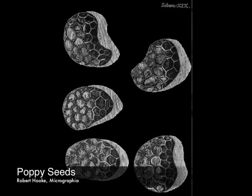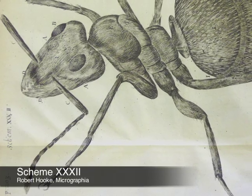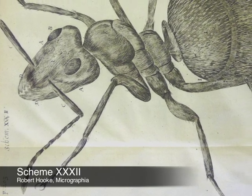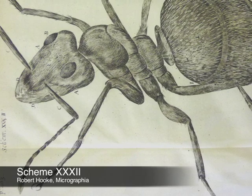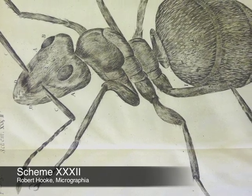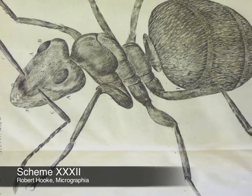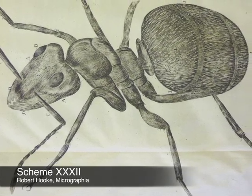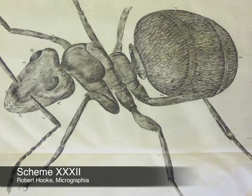What also made Micrographia unique was that unlike Sir Isaac Newton's works, the Principia, and other scientific works of that day, an individual didn't need to read Latin or understand complex mathematics to understand the significance of the book. Individuals could simply look at the pictures and discover a new way of looking at the world.